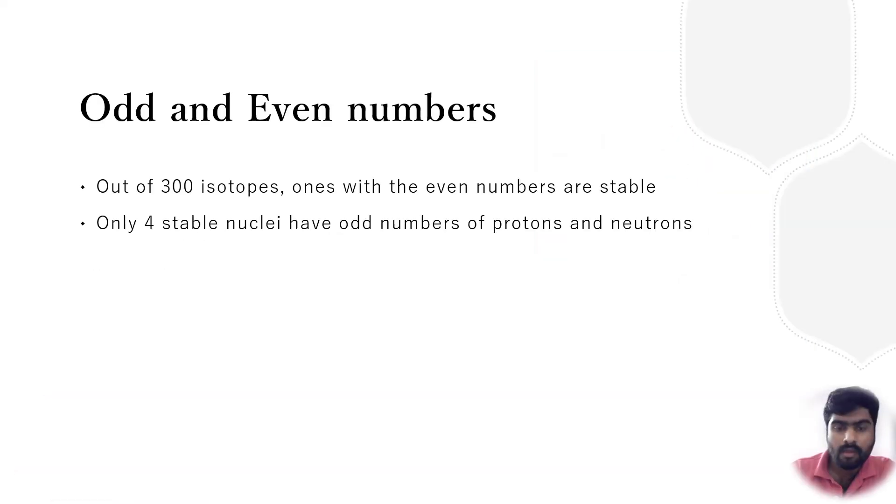Now we can compare nuclear stability with odd or even numbers. They took around 300 isotopes. The ones with even numbers are more stable than the odd numbers, but I'm not saying that odd numbers are unstable. Only four stable nuclei have odd numbers of protons and neutrons.